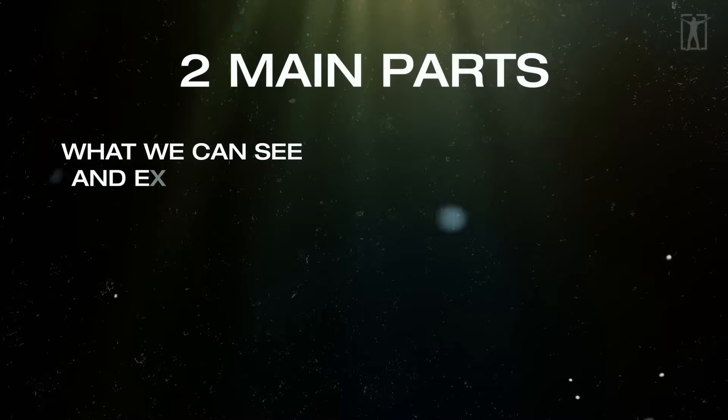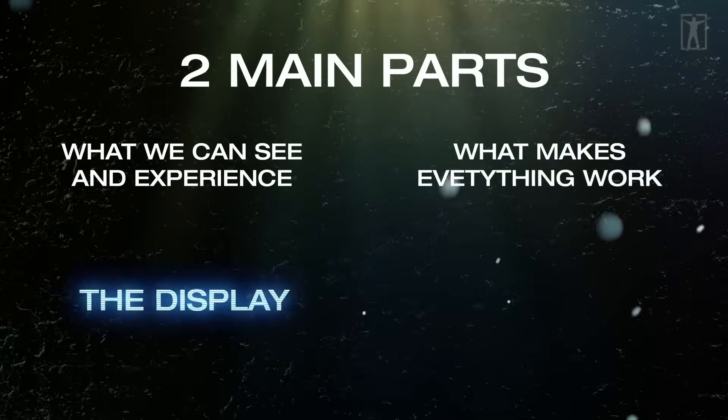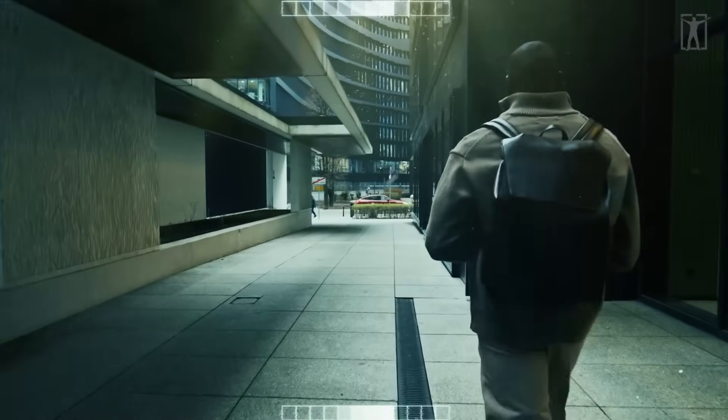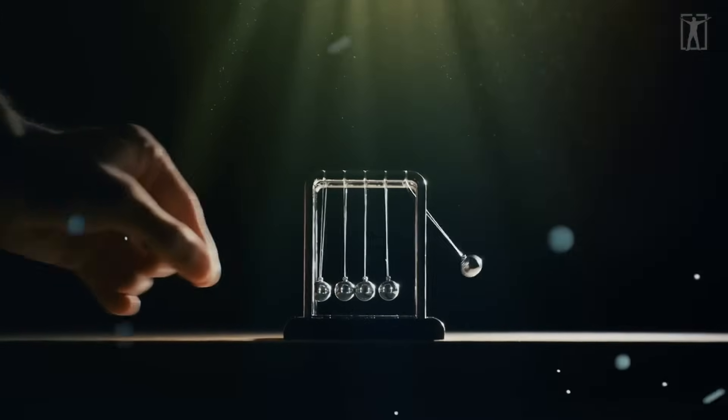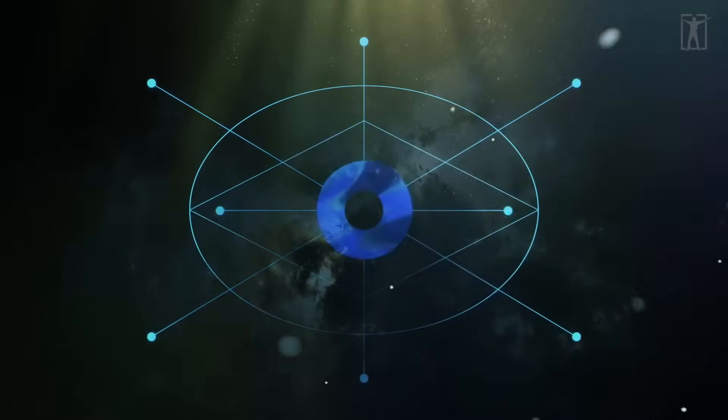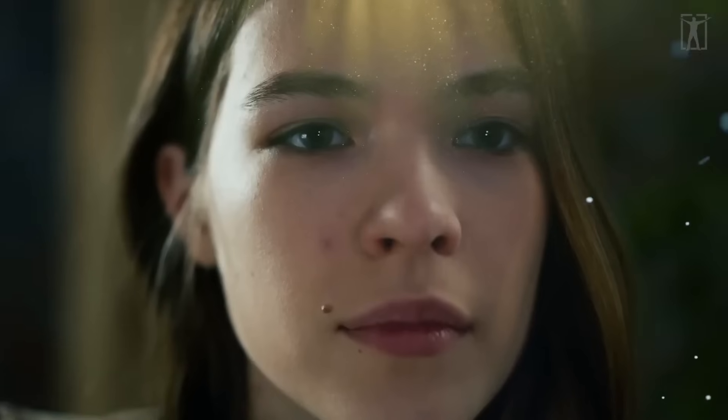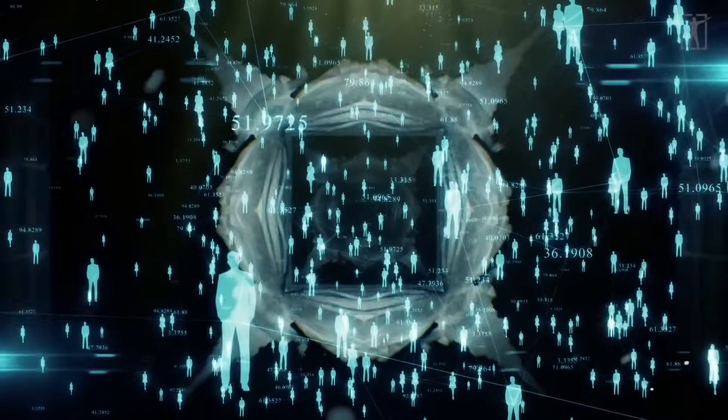The universe works in a way similar to a complex computer system with two main parts. What we can see and experience, the display. And what makes everything work behind the scenes, the processor. This idea comes from the simulation hypothesis, which suggests our reality might be like a sophisticated simulation. But God isn't just part of this system. He's bigger than it and controls both aspects. What makes this understanding unique is that everything we see exists in different states, like frozen moments in time. These states need something to make them change and move forward. And that's where God's role becomes crucial. He provides the processing power that makes everything work together, not just maintaining the universe, but actively participating in its operation. This understanding of how reality works leads us to a deeper question about consciousness. How do we, as conscious beings, fit into this complex system of display and processing?